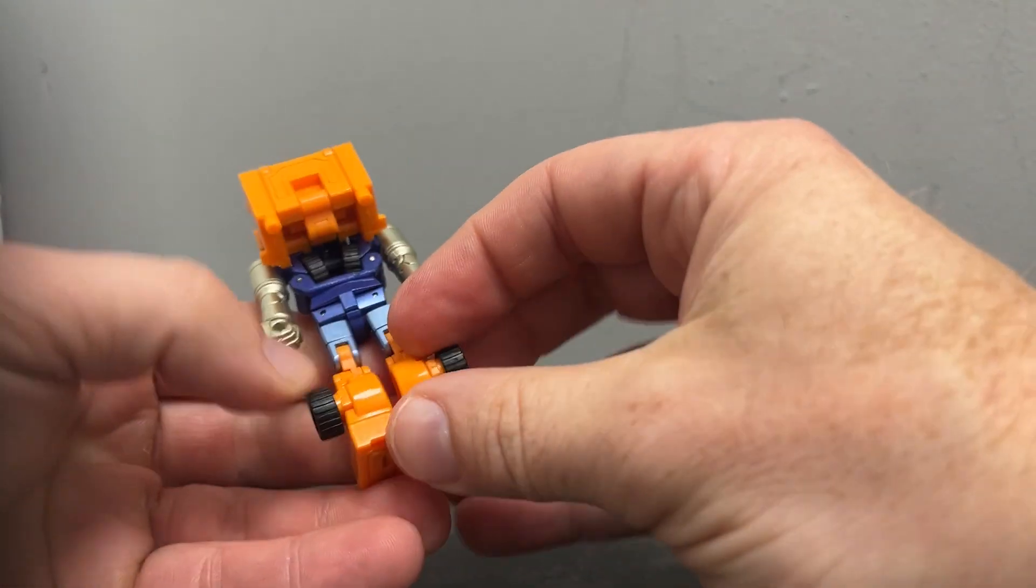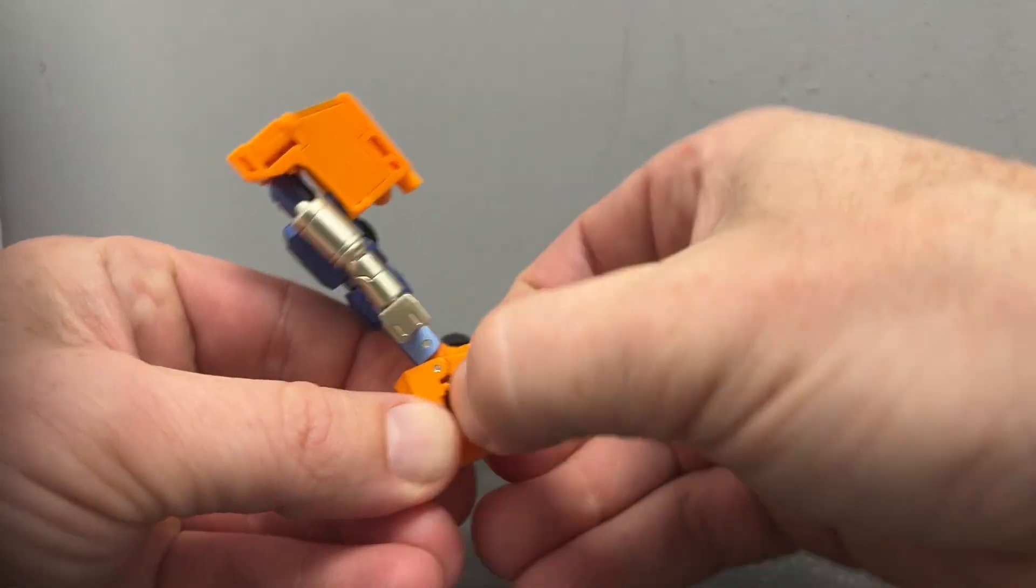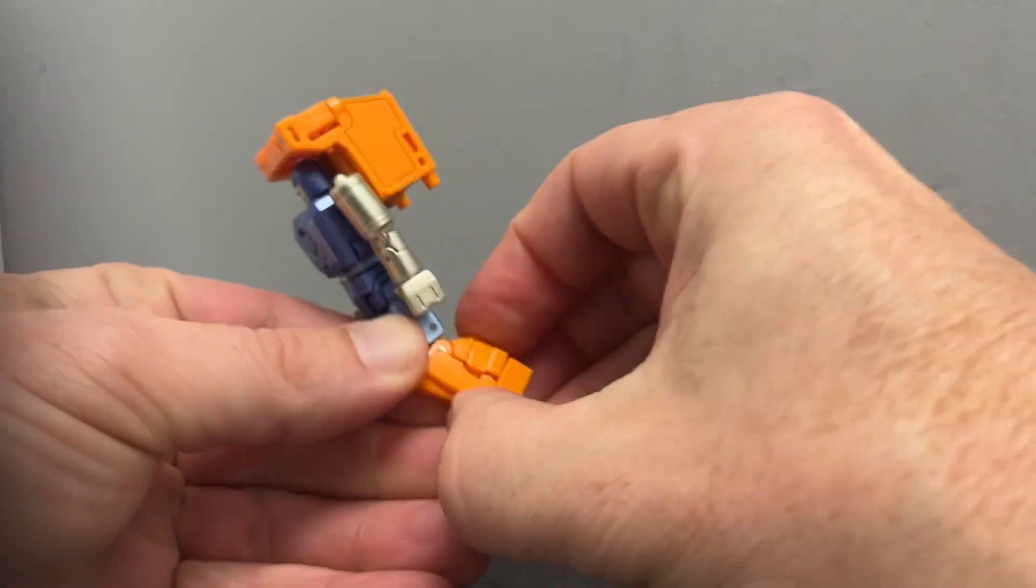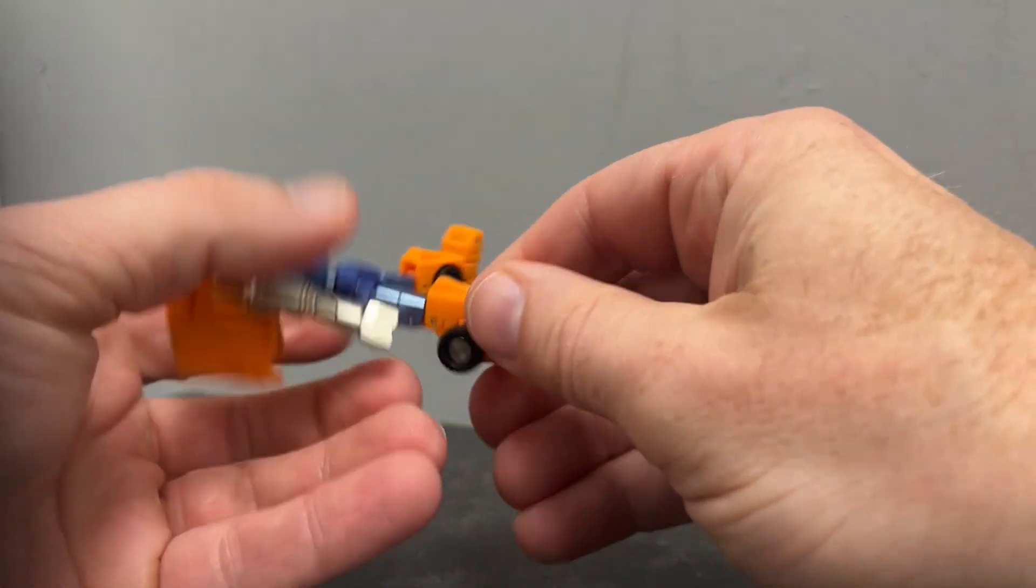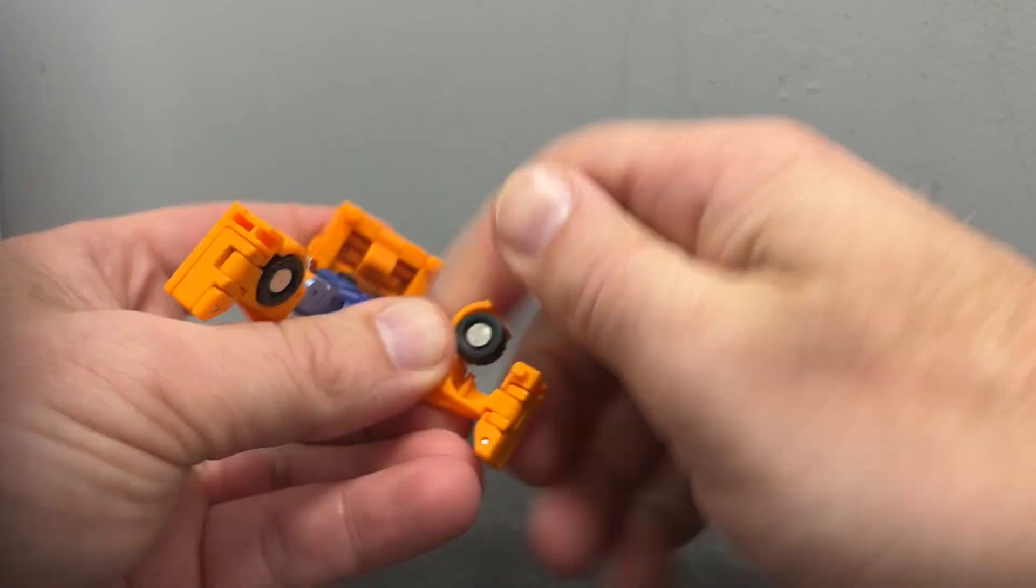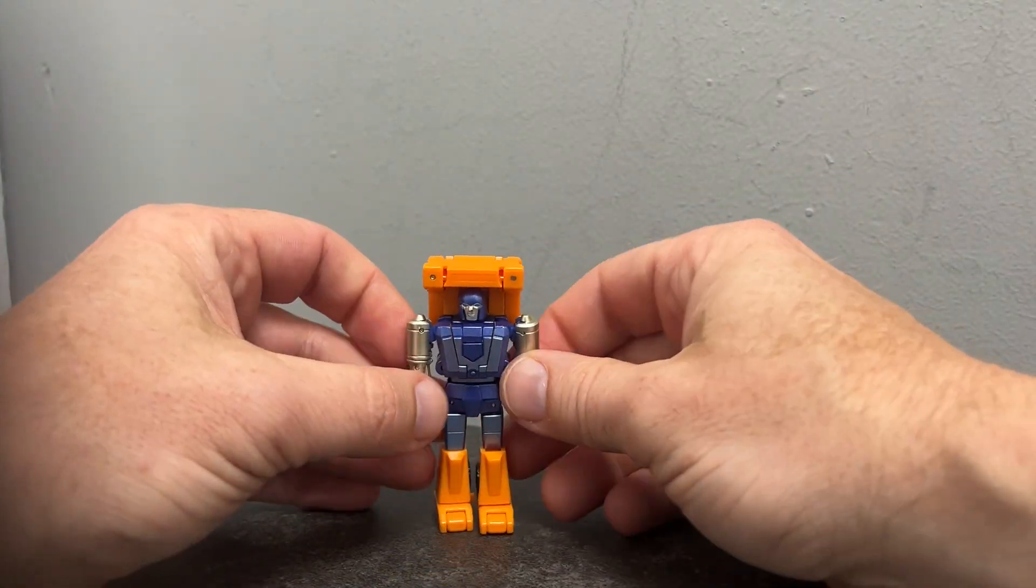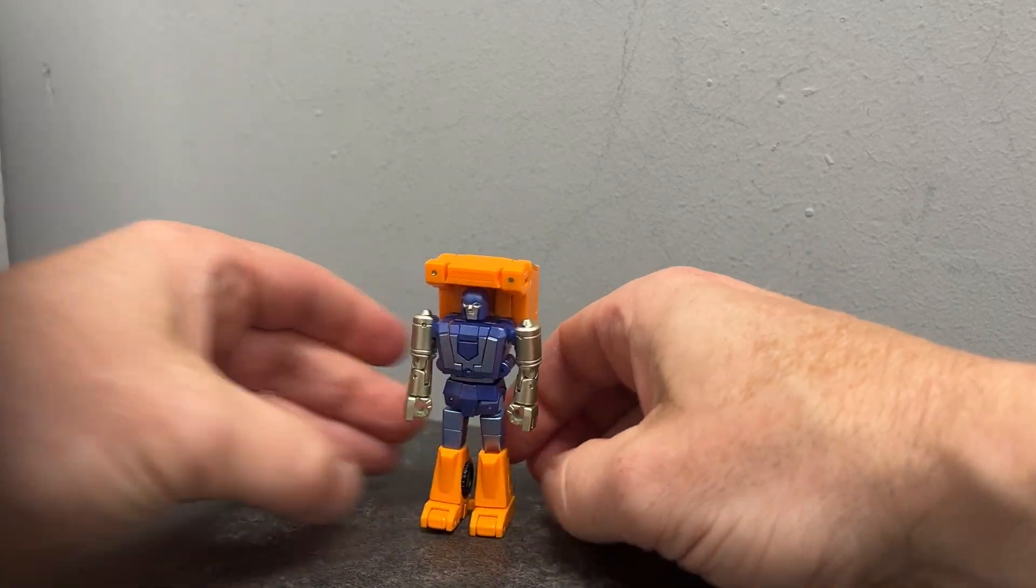Take the wheels and fold this in and tuck that down. That was obviously the toughest bit - the upper part is always the toughest. That's where the wheel is going to fit in. Fold this up, rotate that underneath, and indeed stand that in there. And there he is in his robot mode.